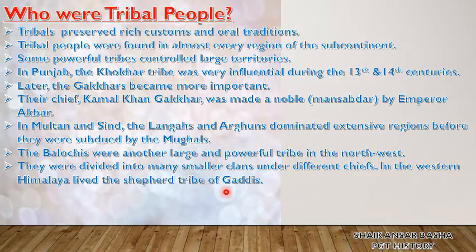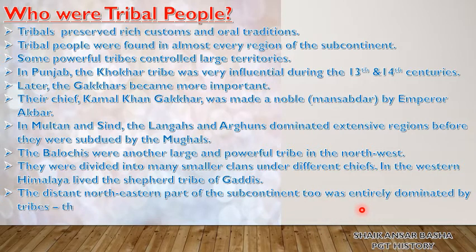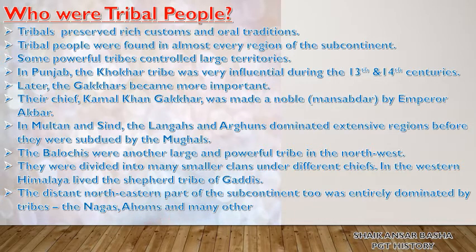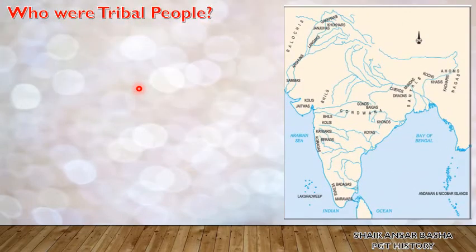The Baluchis were divided into many smaller clans under different chiefs. In the western Himalayas lived the shepherd tribe of Gaddis. They practiced transhumance — going with their cattle into the hills and higher strata of the Himalayas for fodder. The distant northeastern part of the subcontinent was entirely dominated by tribal people — the Nagas, the Ahoms and many others.